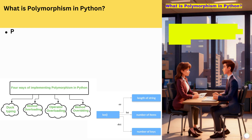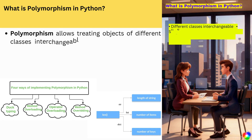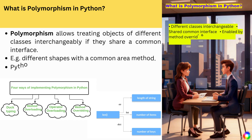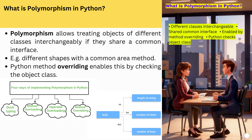What is polymorphism in Python? Polymorphism allows treating objects of different classes interchangeably if they share a common interface — e.g., different shapes with a common area method. Python method overriding enables this by checking the object class.